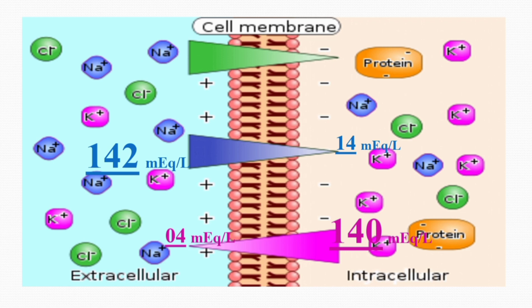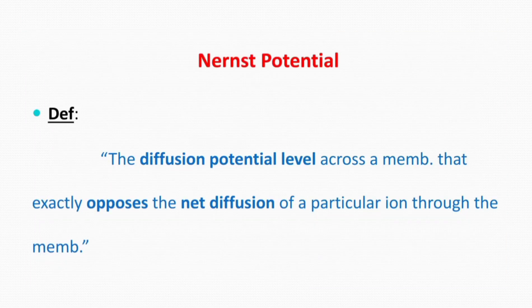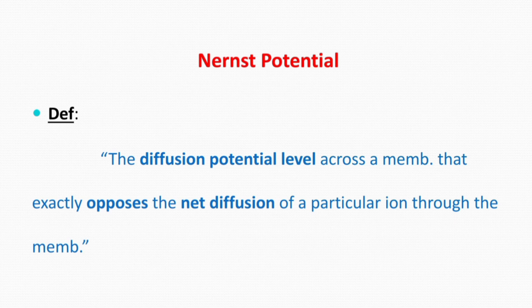Now we move on to the Nernst potential. It is defined as the diffusion potential level across a membrane which exactly opposes the net diffusion of a particular ion through the membrane. That is, it is the potential at which the electrical gradient exactly balances the concentration gradient for that ion.